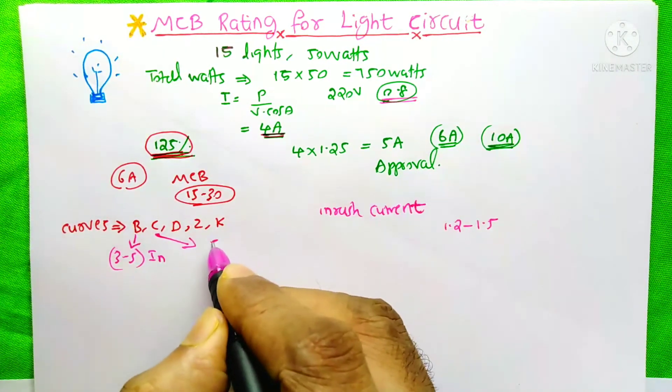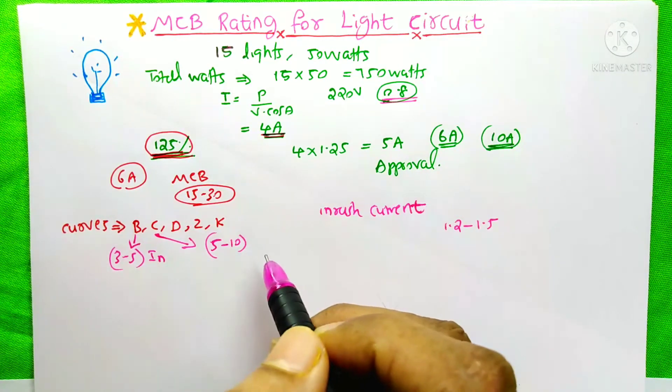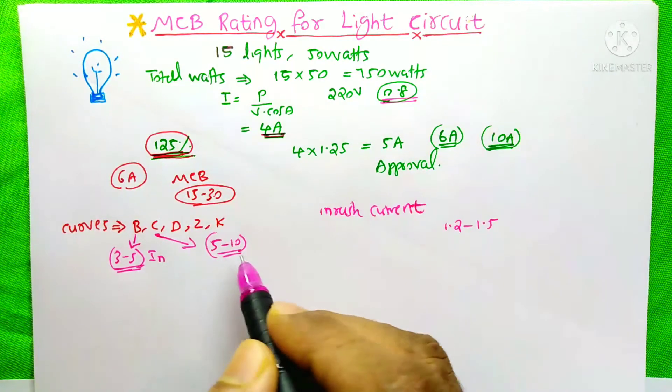Don't purchase the C curve because it allows 5 to 10 times. We actually don't require this much capacity. We only require this one, so don't waste your money purchasing the C curve.